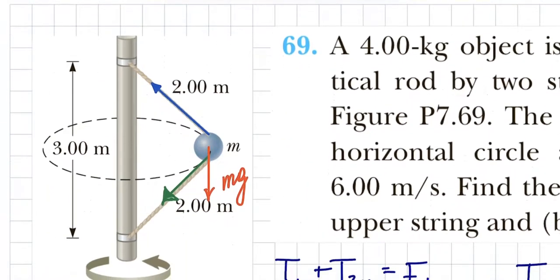In this example, we have the object which is a ball completing a horizontal circle with a certain radius, which we do not know but can find, and it is held in that centripetal motion, or uniform circular motion for that matter, with two ropes and gravity.